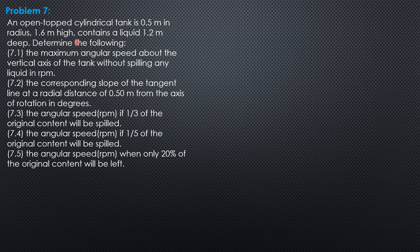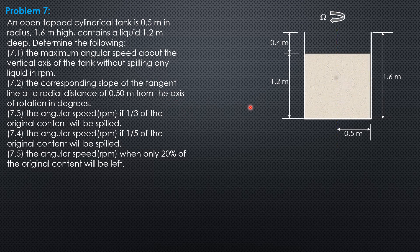So to analyze, to help analyze the situation, let's draw the figure first showing the details. So the radius of the tank, open top, 0.5 meter. The overall height, 1.6. It contains 1.2 meters of liquid. Therefore, this empty depth is 0.4 which is K. 1.6 minus 1.2.